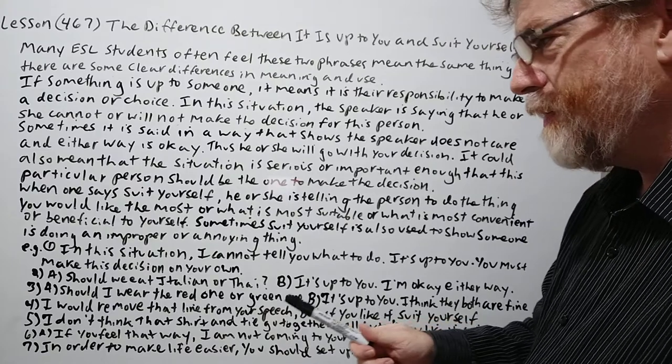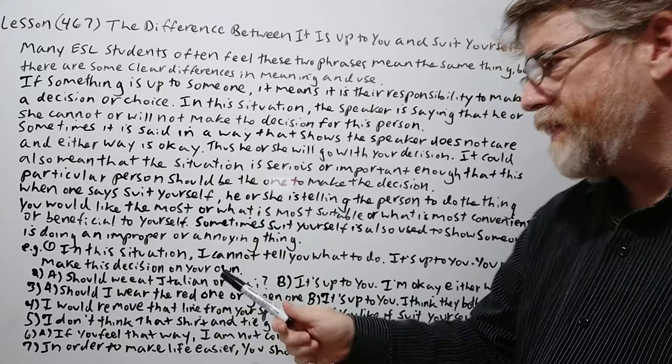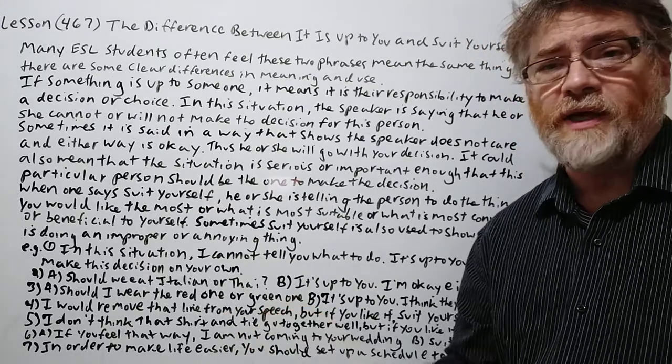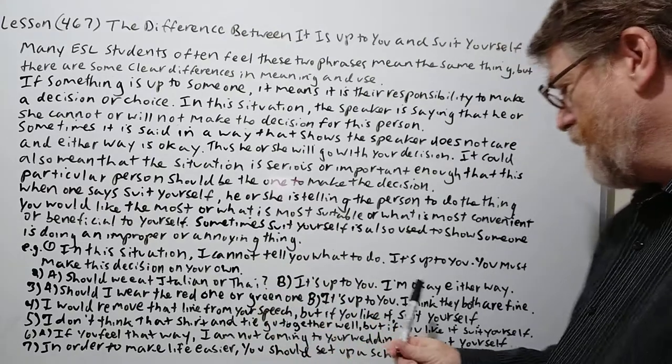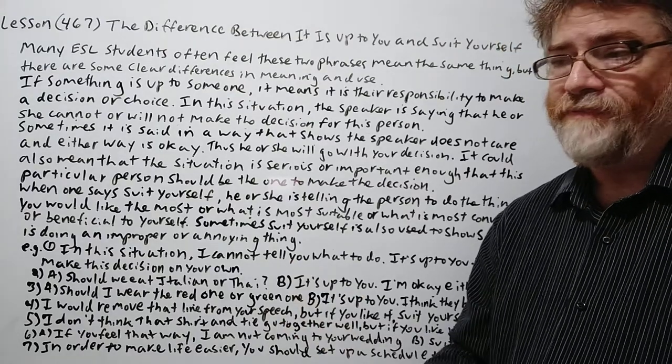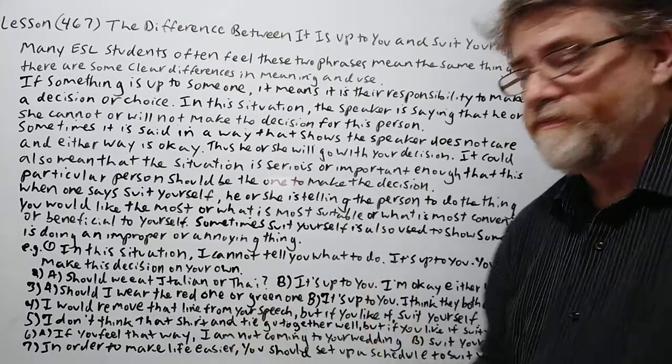Let's look at number two here. Example two is an A-B part and the A part says, should we eat Italian or Thai? You know, going out to a restaurant. And B says, it's up to you. I'm okay either way. Kind of like I don't care. You choose. It doesn't matter. I'm fine with both.